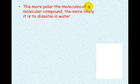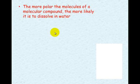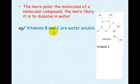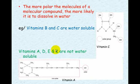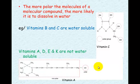The more polar the molecules of a molecular compound, the more likely it is to dissolve in water. For example, vitamin B and vitamin C are water soluble — vitamin C has four hydroxy groups. Vitamins A, D, and K are not water soluble; they're fat soluble. Vitamin A has only one tiny hydroxy group and the rest of the molecule is non-polar, so it has very low water solubility compared to vitamin C, which is very water soluble.